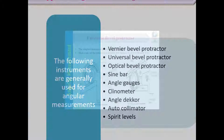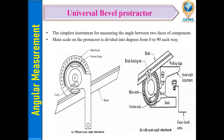The simplest instrument for measuring the angle between two faces is the universal bevel protractor. The main scale on the protractor is divided into degrees from 0 to 90. The parts of the universal bevel protractor are: body, stock, vernier scale, main scale, blade, locking nut, working edge, and acute angle attachment. When taking a reading, the work piece is kept on the stock.